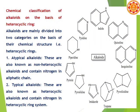Chemical classification of alkaloids is on the basis of the heterocyclic ring. There are two broad divisions: heterocyclic alkaloids, also known as typical alkaloids, which contain nitrogen in the heterocycle; and non-heterocyclic alkaloids, also known as atypical alkaloids or protoalkaloids, which contain nitrogen in a side chain or aliphatic chain.